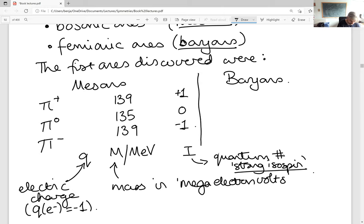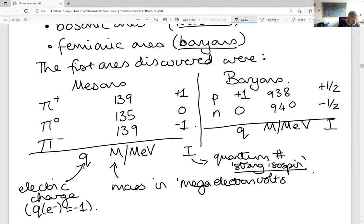And for the baryons, we just had the proton and the neutron. Proton has electric charge plus one, neutron zero, and again they're of similar mass. And their strong isospin is given to be plus and minus one half.